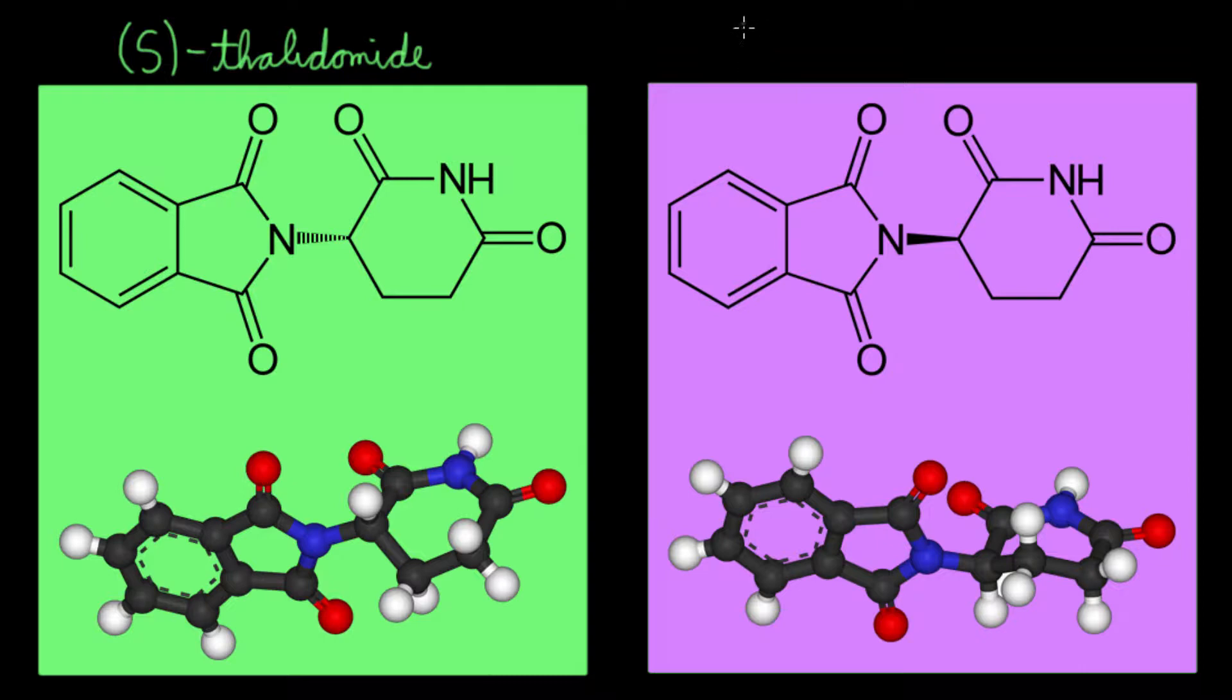Here we have a set of enantiomers. This is the S conformation of thalidomide, and here on the right is the R conformation. Why does it matter that we have two different conformations? Well, you can see the difference quite clearly at the chiral center, where one of the groups points into the screen and the other points out of the screen.